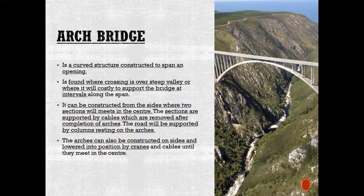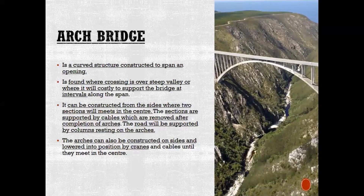It can be constructed from the sides where two sections will meet in the center. The sections are supported by cables which are removed after the completion of the arches. The road will be supported by columns resting on the arches. The arches can also be constructed on sides and lowered into position by cranes, depending on how far apart they are.